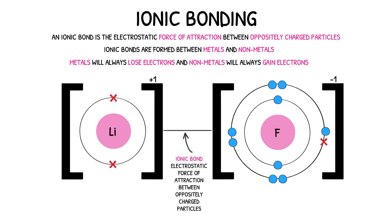The diagram on screen is called a dot and cross diagram, and is used to represent the bonding in different compounds. We use dots to represent the electrons on one element, and crosses to represent the electrons on another. This approach is necessary, as it helps us to identify how the electrons have interacted to form a compound. In this diagram, we can see clearly that an electron has been transferred from lithium to fluorine.